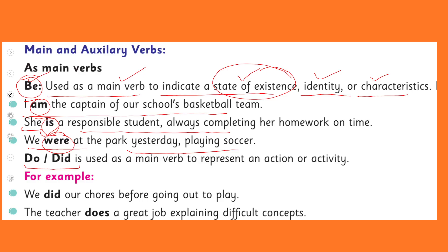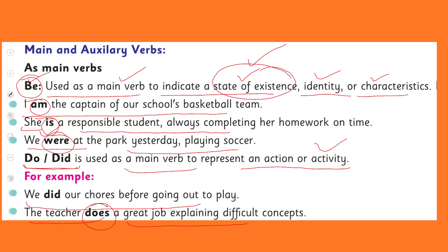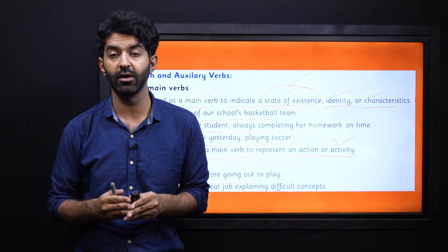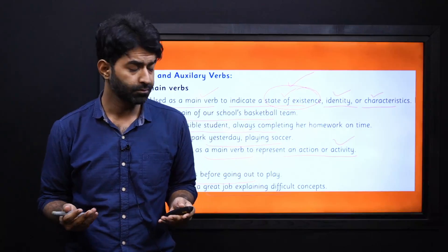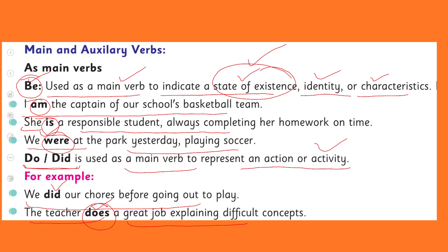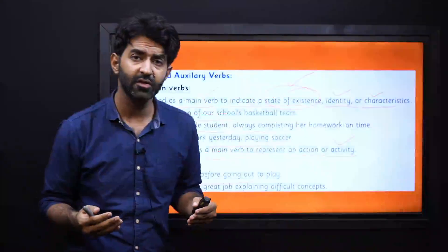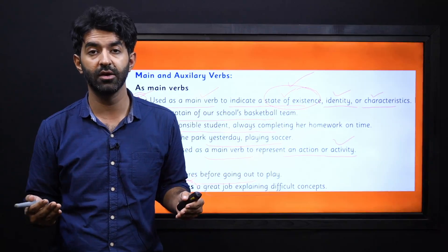Do or did is used as a main verb to represent an action — something being done, performed, or any activity. For example, 'We did our chores before going out to play' or 'The teacher does a great job explaining difficult concepts.' Here it can be 'do' in the present form or 'did' in the past form. We have to use it according to the right tense — if we are talking about the present, we use 'do', and for past events we use 'did', which is the second form of 'do'.